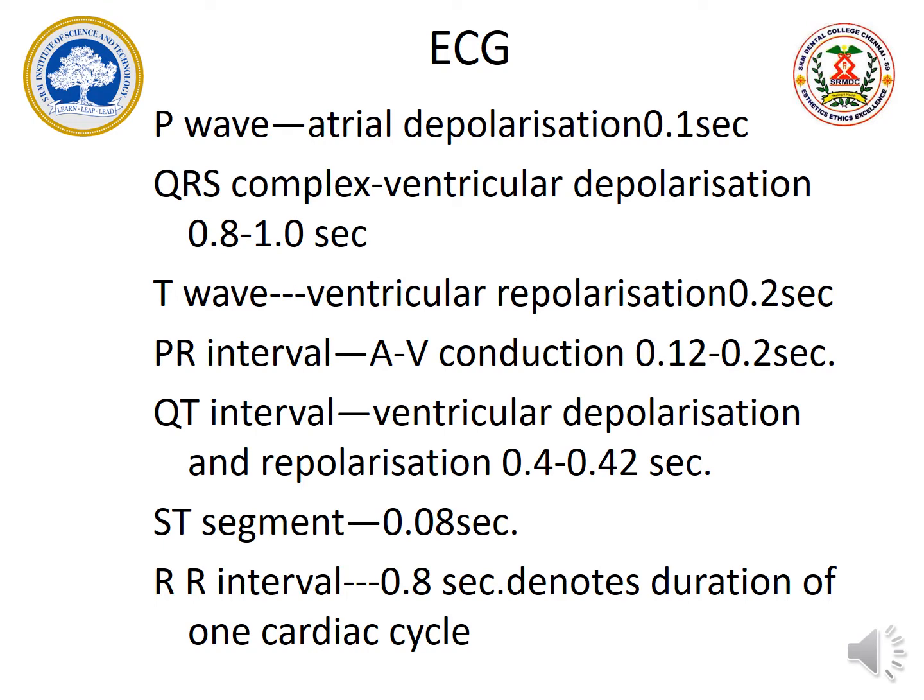The P wave is atrial depolarization. The atrial repolarization has not occurred separately, as it continues with ventricular depolarization. The atrial repolarization is going to be merged with the ventricular depolarization as it has a QRS complex.